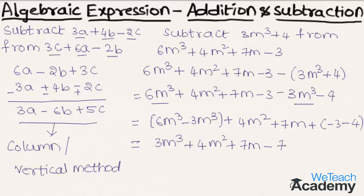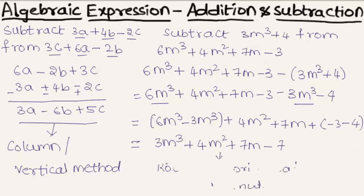We call this method the row or horizontal method. This was the basic introduction on how to solve algebraic expressions under addition and subtraction. Hope you understood the concept. Do like and subscribe to vteachacademy.com. Thanks for watching. Have a nice day.